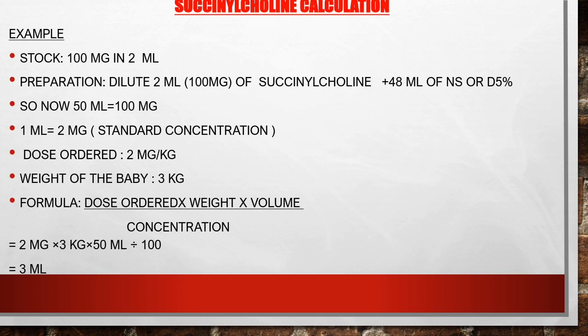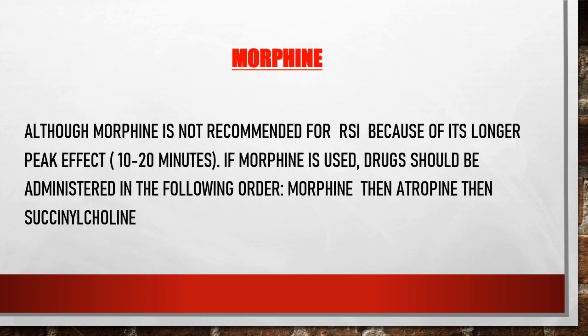Succinylcholine calculation. Stock: 100 mg in 2 ml. Preparation: dilute 2 ml (100 mg) of succinylcholine plus 48 ml of normal saline or D5%. After dilution we have 50 ml containing 100 mg. Therefore 1 ml equals 100 mg divided by 50 ml, giving 2 mg/ml as the standard concentration. Dose ordered: 2 mg/kg. Weight of the baby: 3 kg. Formula: dose ordered times weight times volume divided by the concentration — 2 mg times 3 kg times 50 ml divided by 100 mg. You will get 3 ml.